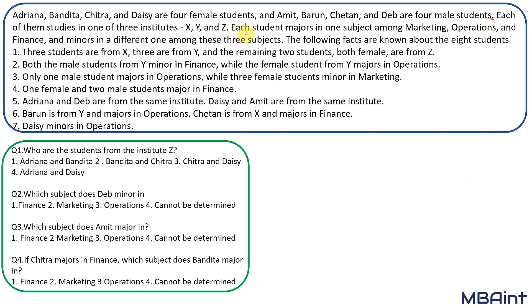Each of them studies in three different institutes: X, Y, and Z. Each student majors in one subject — that is, marketing, operations, or finance — and minors in one different subject. So if a student majors in one particular subject, they'll take a minor in one of the other subjects. All together we have eight students.